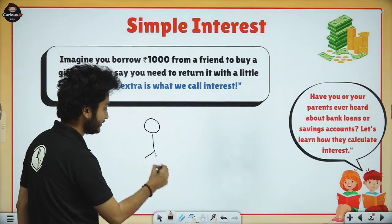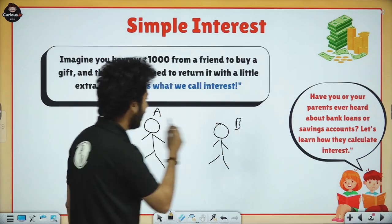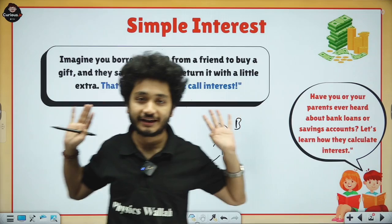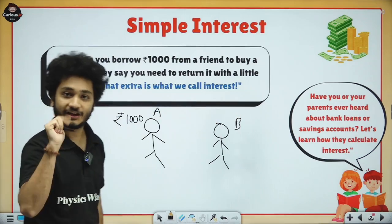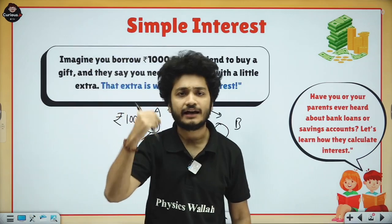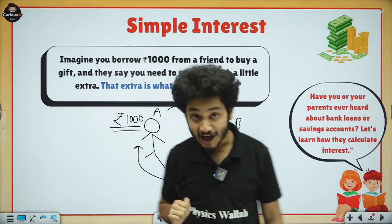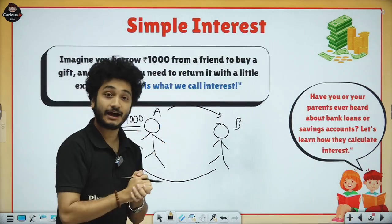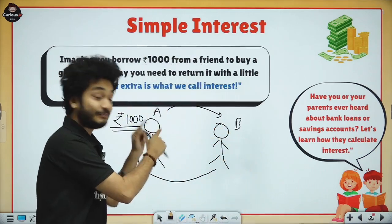There are two friends, let's say A and B. Friend A suddenly needs some money and he has nothing, so he wants 1000 rupees. He asks friend B: 'I need 1000 rupees and I'll return it to you.' So B gives A 1000 rupees — B helped A, right?